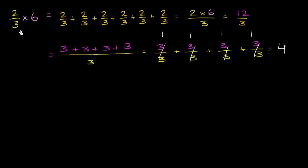Another way to think of it is as 2/3 of 6. So let's think about that. Let me draw a number line here. And I'm going to draw the number line up to 6. So what I care about is a section of the number line that goes to 6. So that looks pretty good. So this is 1, 2, 3, 4, 5, and 6.